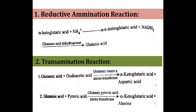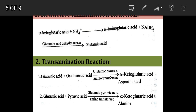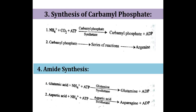So, glutamic acid plus oxaloacetic acid gives alpha-ketoglutaric acid and aspartic acid. This is how the transamination reaction takes place.